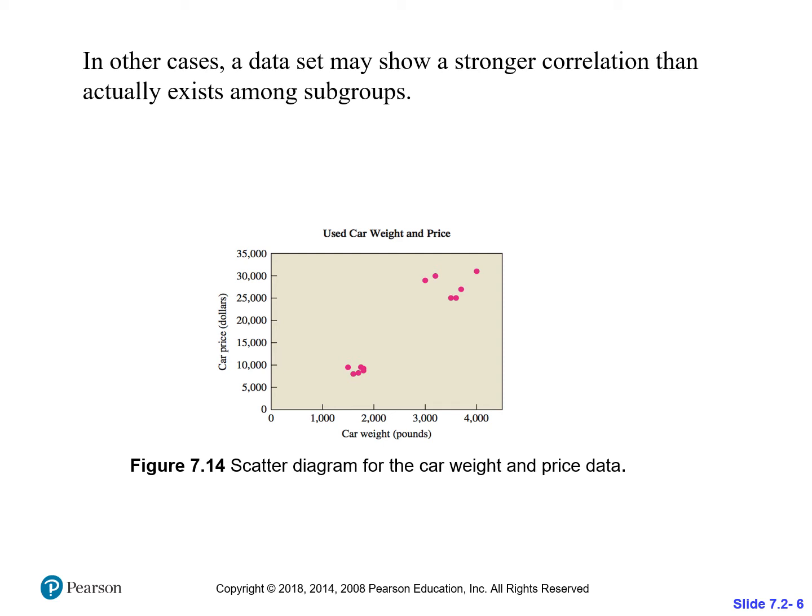If you were to try to draw a line, you might get a really strong positive correlation. But notice, really you've just got two little clumps of data. So you can't really say that there's a linear relationship here. The math might give you a high R, but that doesn't mean you're going to be able to draw a line. The important thing is that there's a massive gap in the data between 2,000 and a little over 3,000 pounds — a huge gap where there's just no data points at all.